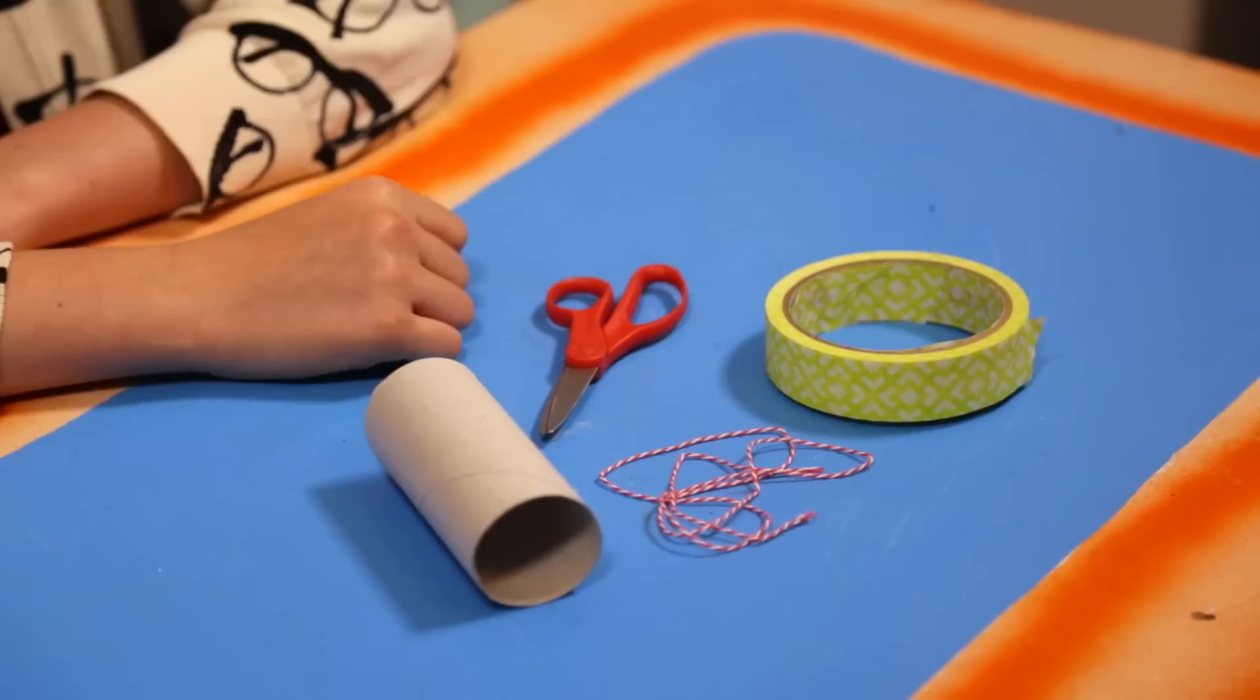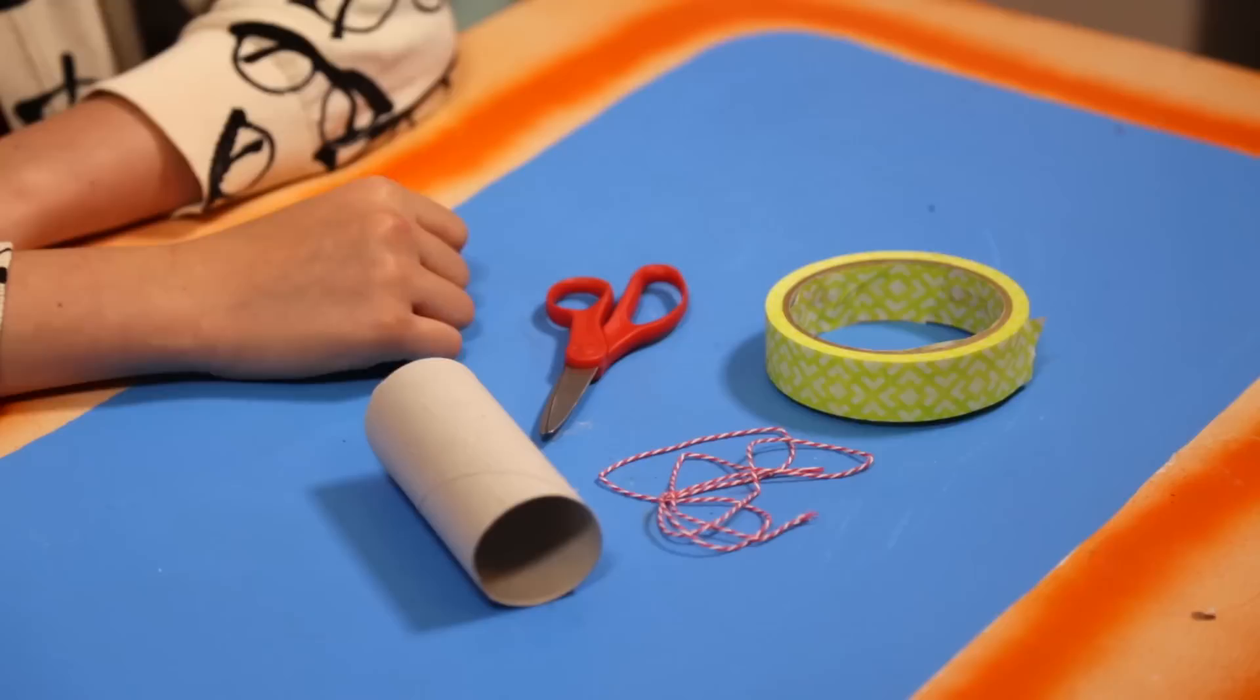First up, my Tiny Treasures gift box. For this, you'll need an empty toilet paper roll, some scissors, colorful tape, and yarn.